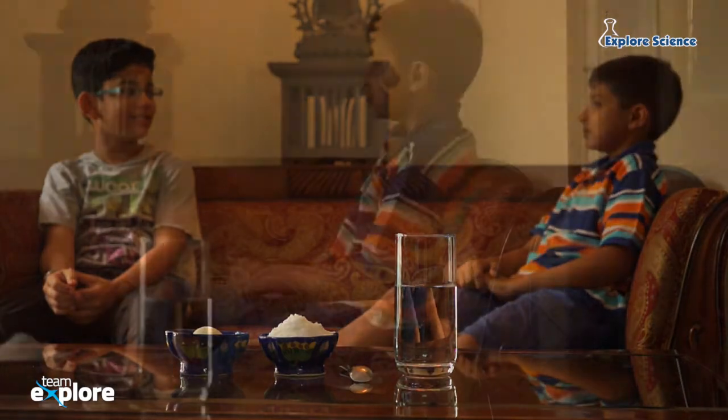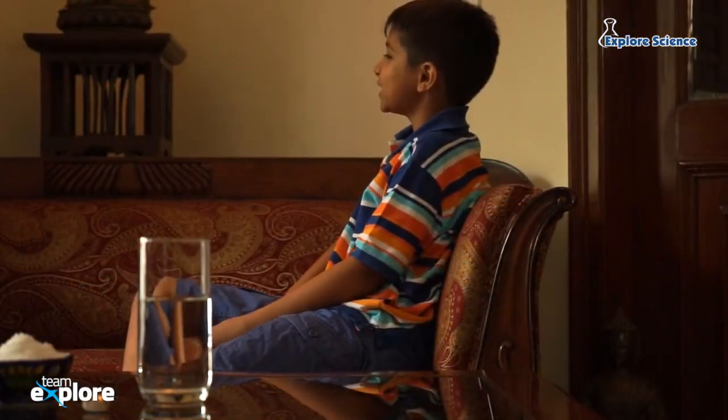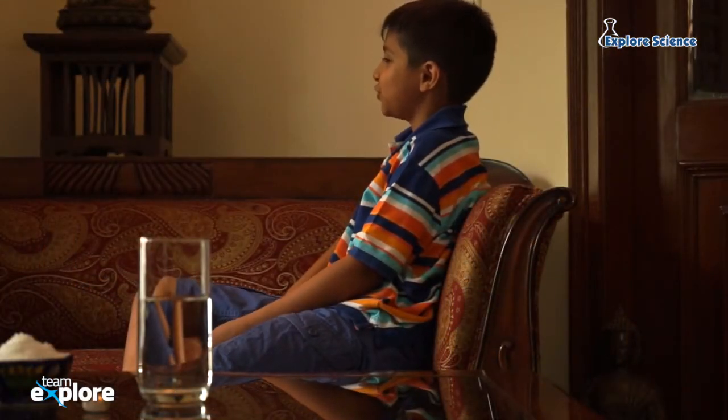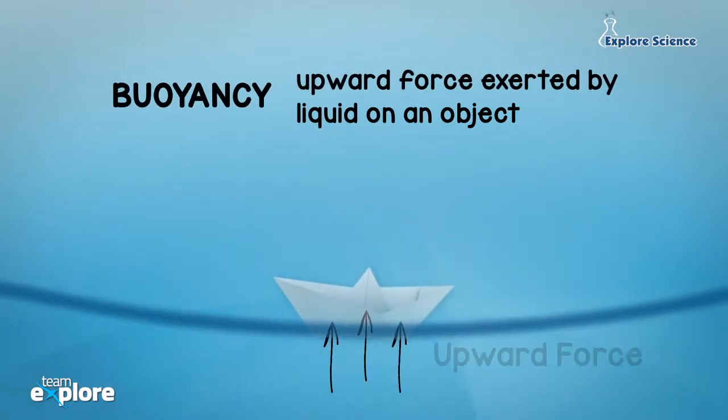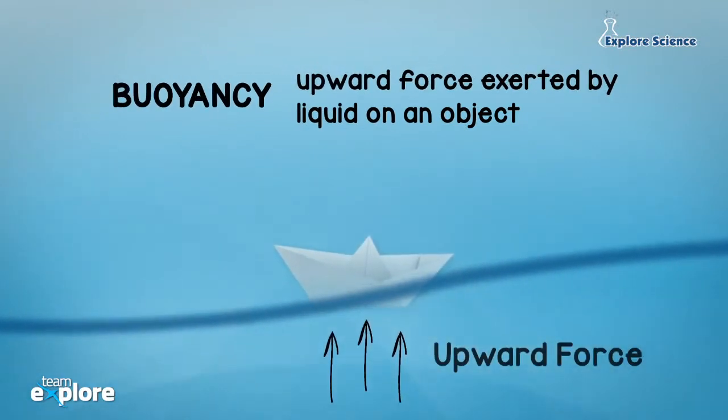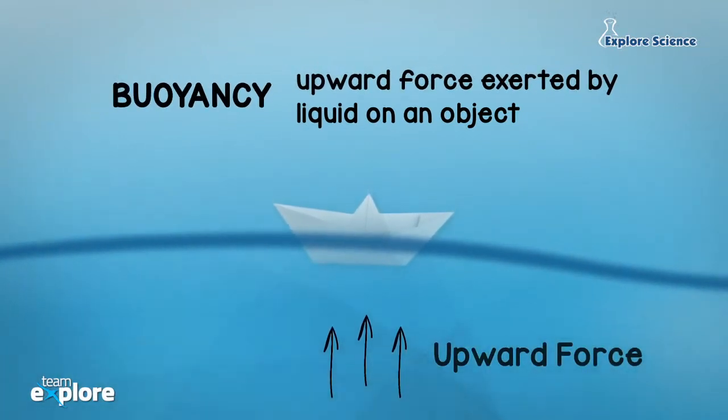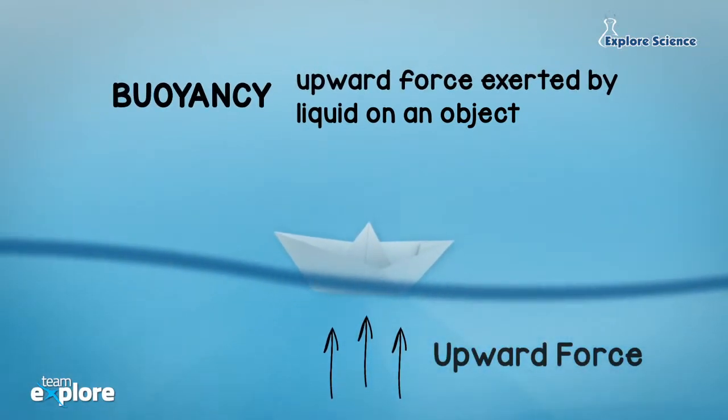Why do we call it the Dead Sea? The high amount of salt makes it difficult for animals to survive here. Did you know, salt makes it easier for us to float on water. Let's show how adding salt to water increases the buoyancy. Buoyancy is the upward force that is exerted by the liquid on an object.